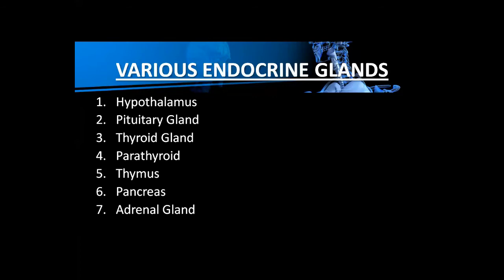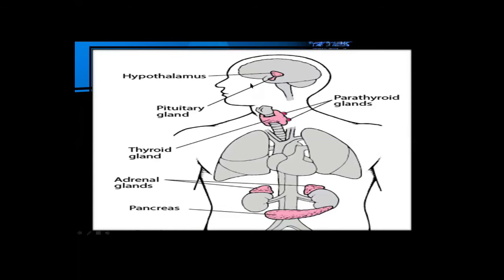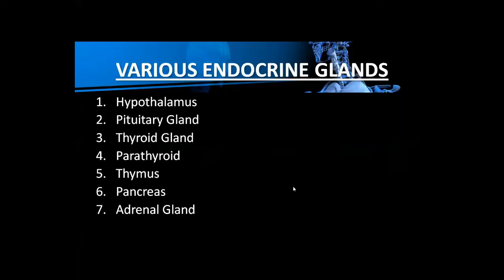Point number four is the parathyroid gland. There are four small glands found on the back side of the thyroid gland — these are the parathyroid glands. Point number five is the thymus gland, which is mostly found in the chest or upper portion of the chest.